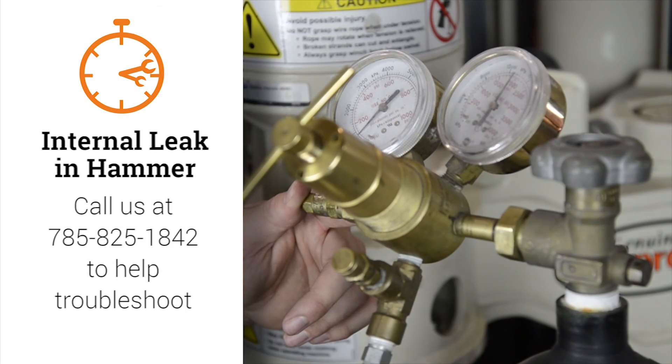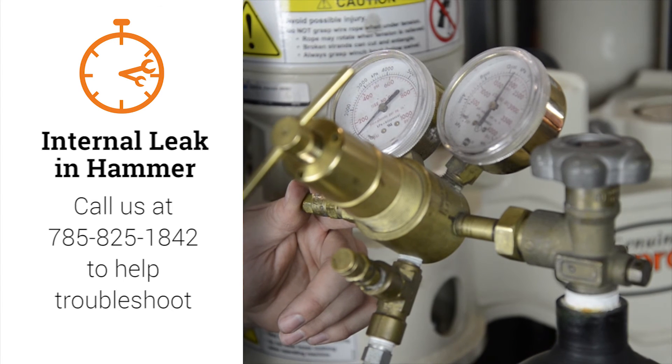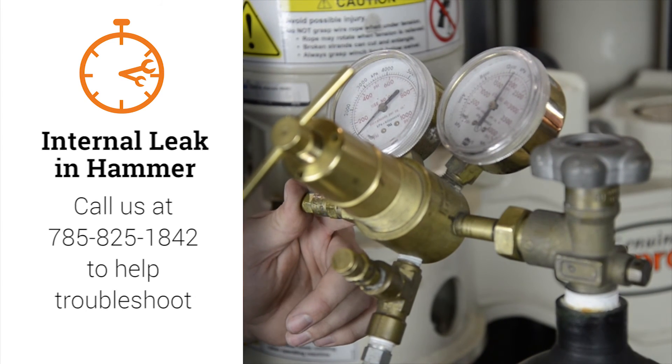If you cannot locate an external leak, you need to go back to the hydraulic reservoir on your machine and listen. If you hear bubbling in the tank, you have an internal leak in the hammer and nitrogen is leaking all the way through the seals and back to the hydraulic tank. If you have this happen, you should call Geoprobe Service and we can help you troubleshoot the process.